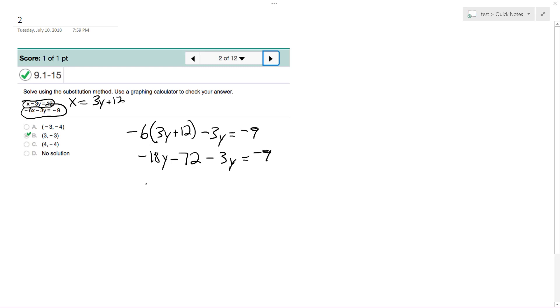So I get negative 21y, and then add 72 to both sides. That's going to get me positive 63. So y is equal to negative 3.